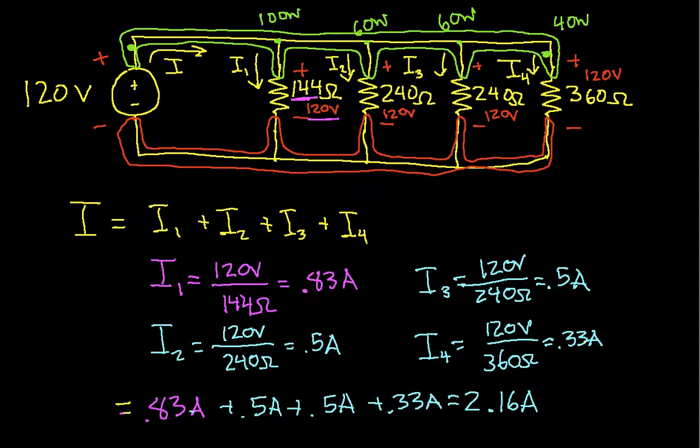Okay, so what this says is that the voltage source, in order to keep 120 volts across each of the light bulbs, will have to put out a total of 2.16 amps.